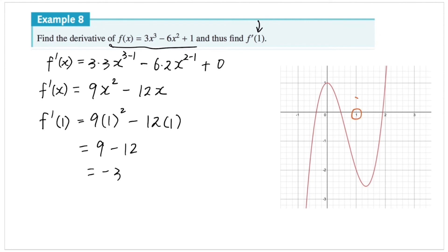Now that we know what the derivative function is, we can sub in the value x is equal to 1 to evaluate the derivative function. Every time when we see x, we replace it with 1. So we have 9 times 1 squared minus 12 times 1, and that's going to be 9 minus 12, which is negative 3. Negative 3 is the gradient of the function at the point where x is equal to 1 — it is the gradient of the tangent line at that point on the cubic graph.